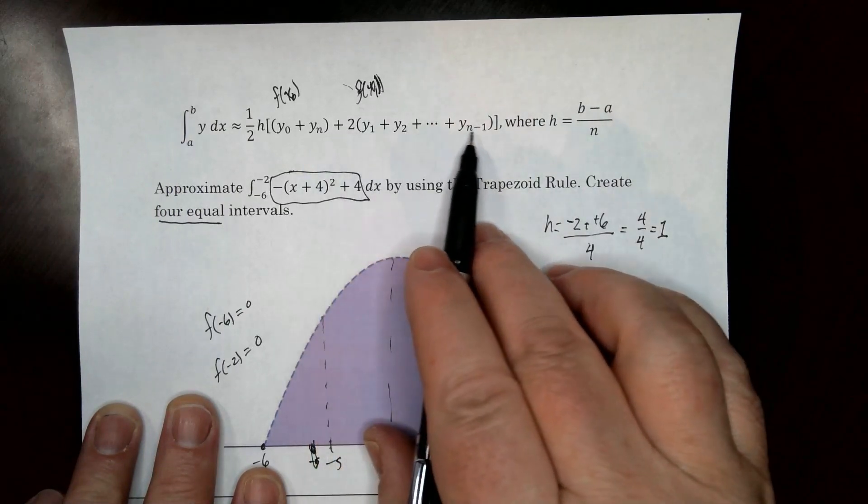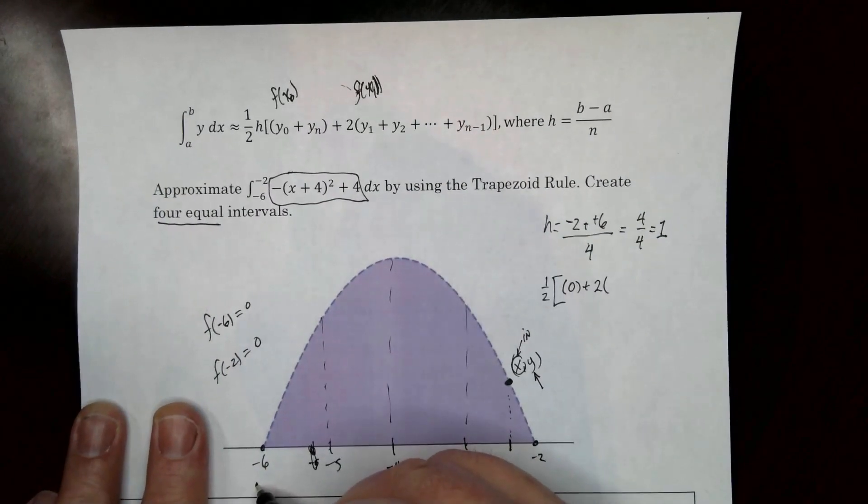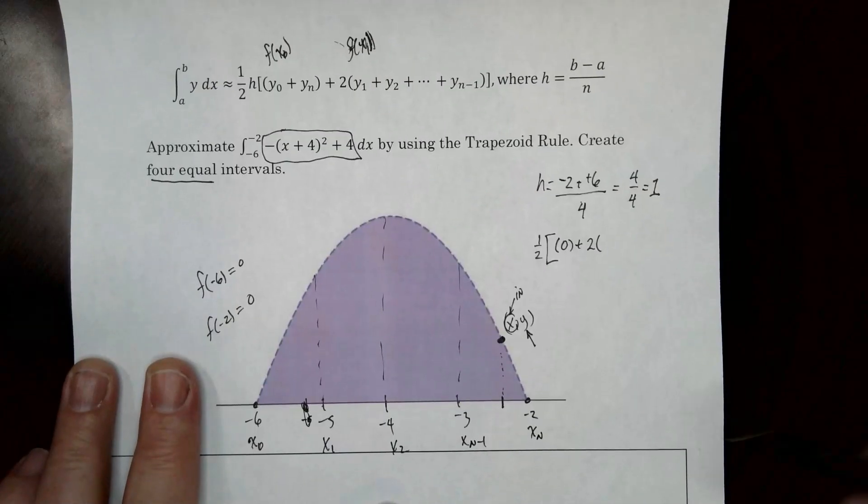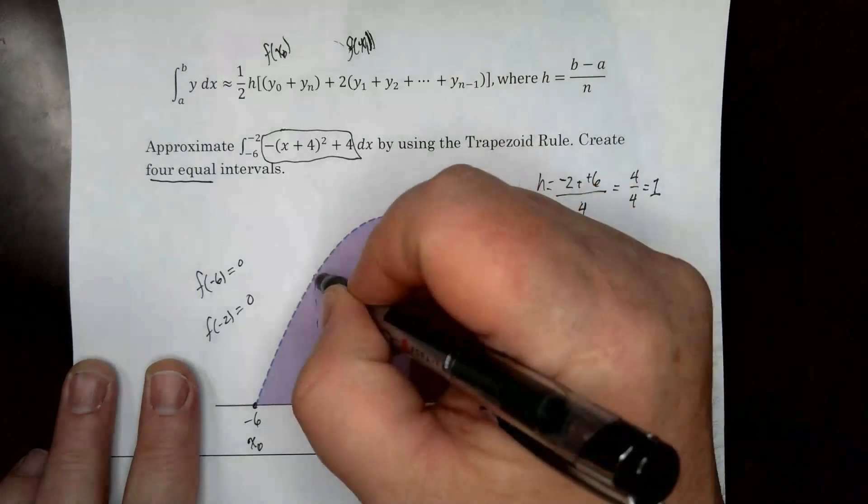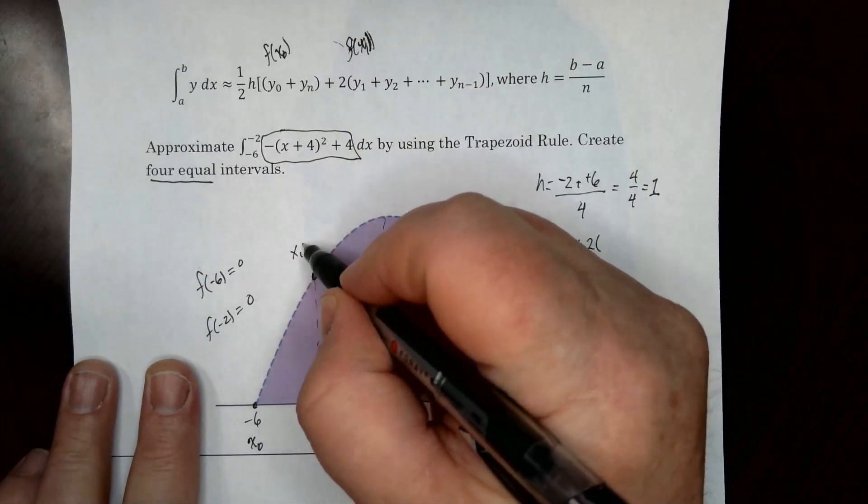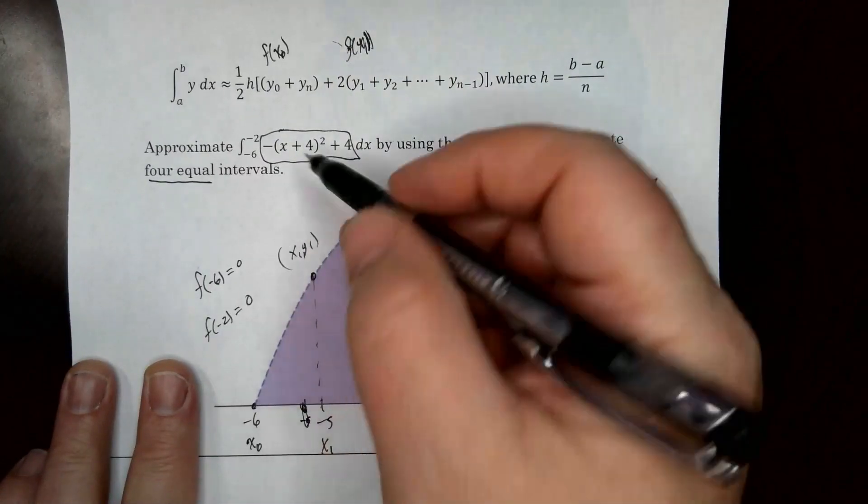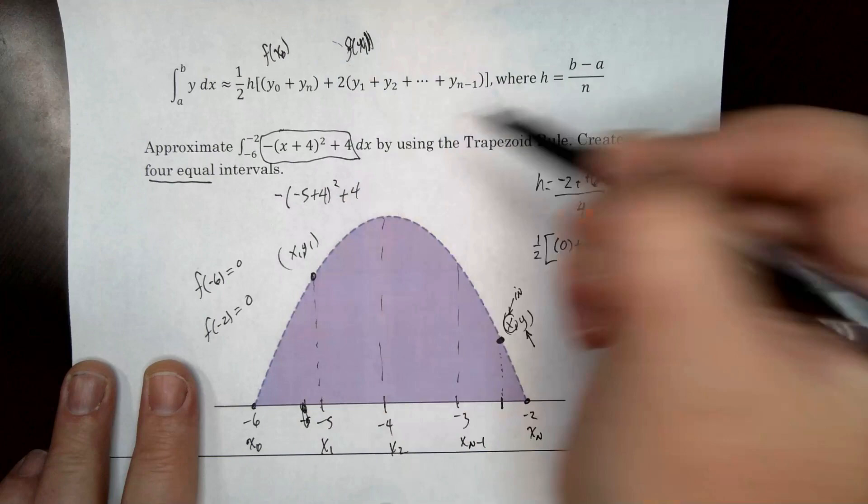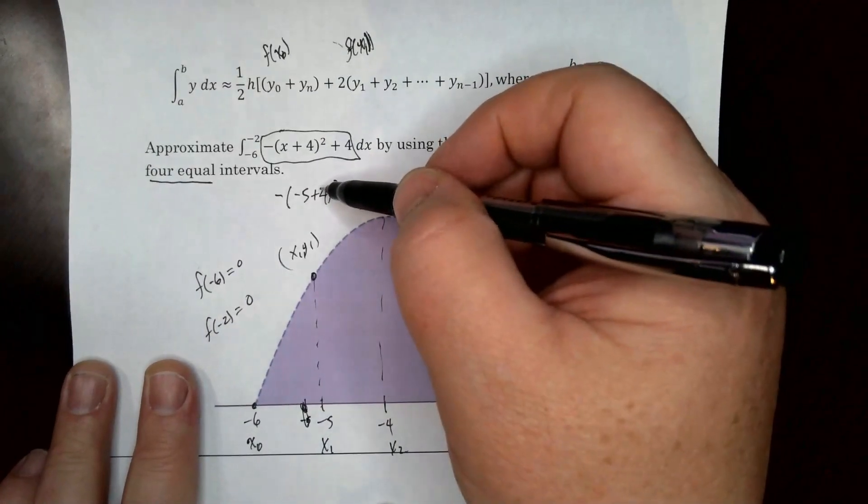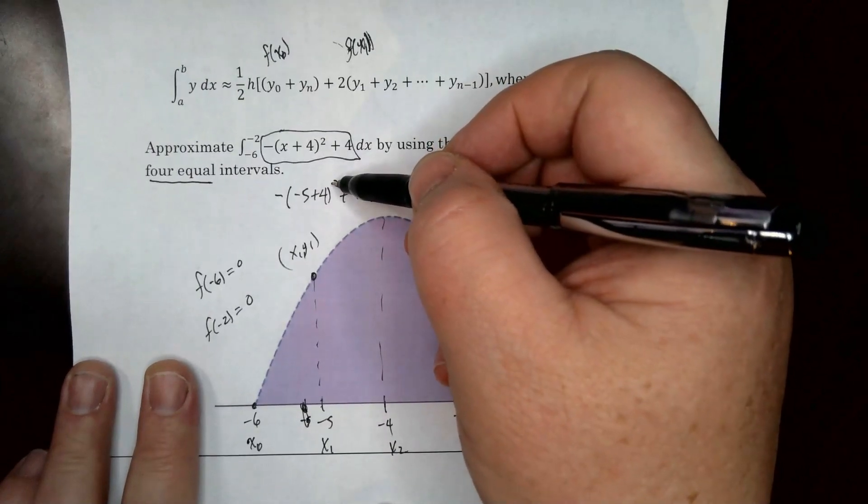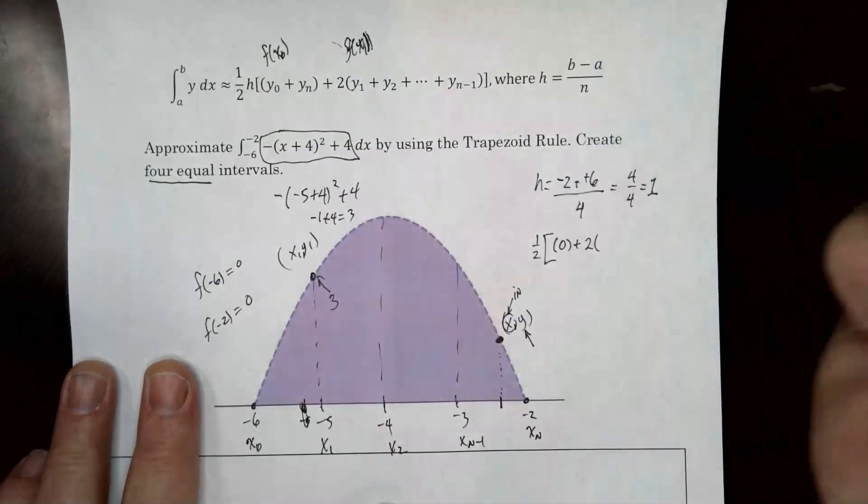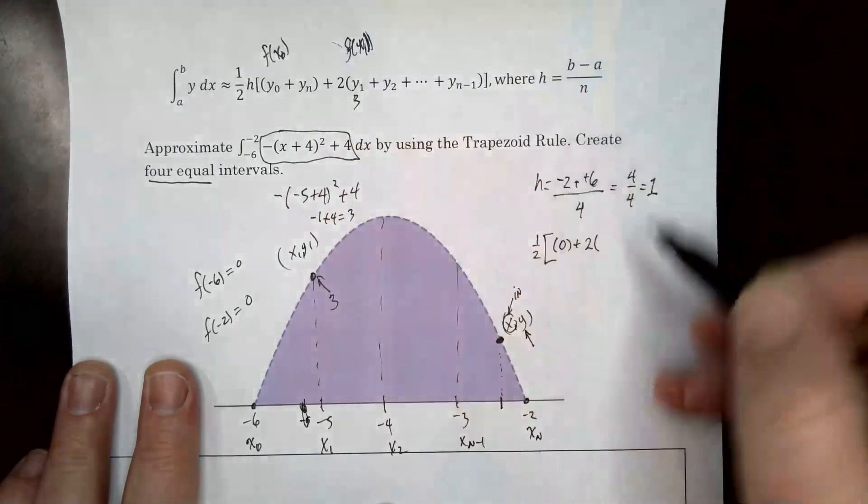Now we have to figure out what are all these things right here. Well, if that's x naught and that's xn, the very last one, this is x1, x2, and x to the n minus 1, or x sub 3. So we have to figure out those y values. So to figure out y1, because this is x1, y1 right here, to figure out y1, you just plug in x1. So I'm negative 5 plus 4 squared plus 4. So negative 5 plus 4 is negative 1, negative 1 squared, positive 1. So that's 3. That right there is 3. So this is 3, plugging it in.